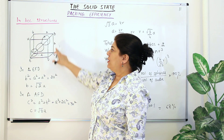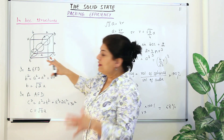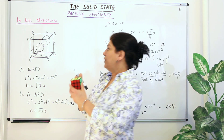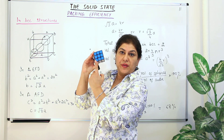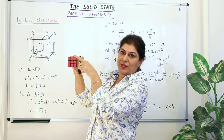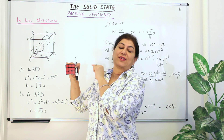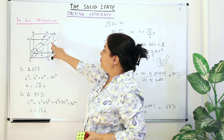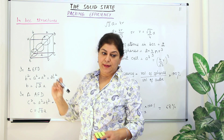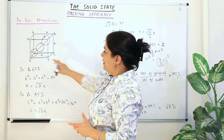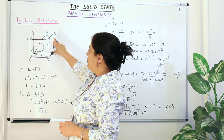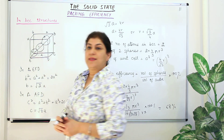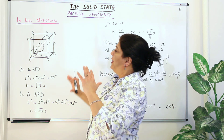Here, for the BCC explanation, I'll be using a body diagonal. A body diagonal involves three spheres — one at a corner in the back, one at a corner in the front, and the sphere in the center of the body. Drawing a line from A to F across the body of the cube gives the body diagonal, whose length is different from both the face diagonal and the side. We'll call the body diagonal C.